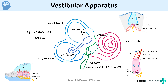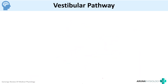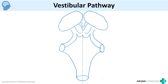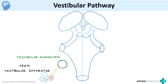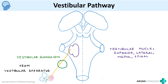Whenever there is a rotation or acceleration, or whenever there is a linear acceleration, these sense organs contain hair cells which detect that acceleration and convert it into neural signals. To depict the vestibular pathway you can draw a cut section showing the thalamus and the brainstem. Impulses from the vestibular apparatus pass through the vestibulocochlear nerve and first reach the vestibular ganglion, from where they reach the vestibular nuclei of the brainstem.